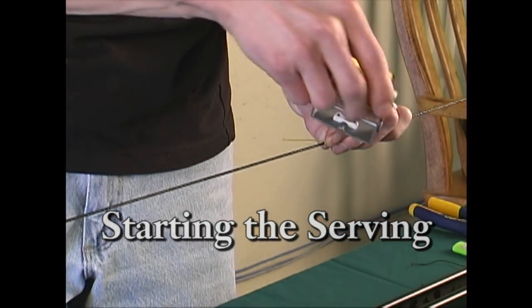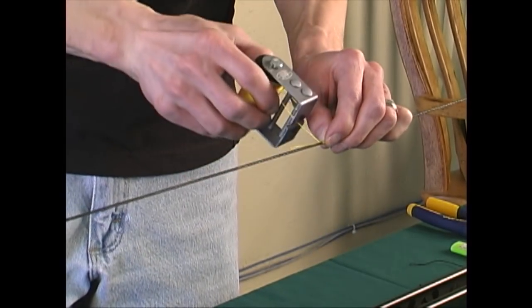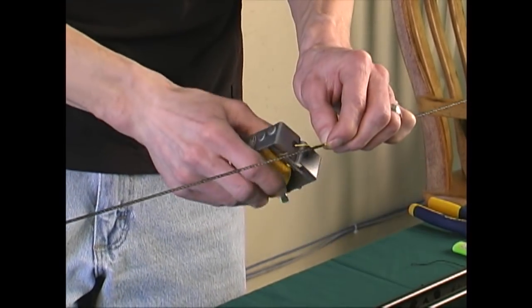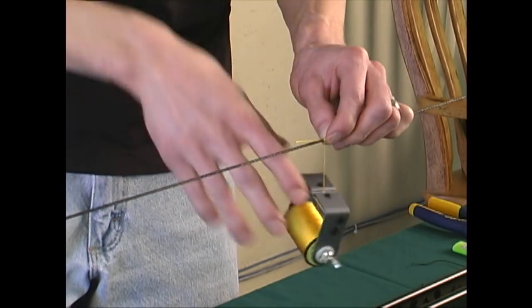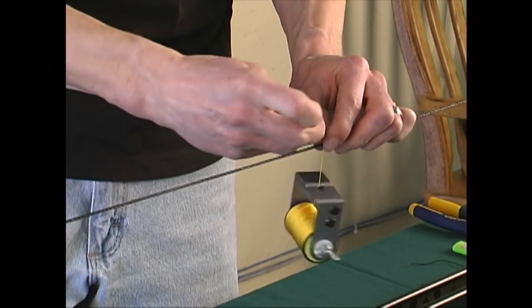From this point, use your thumb to pinch so the string stays in place and start wrapping the serving around by hand. What you're trying to do is pinch that tag end in place so that you can start to serve over it.